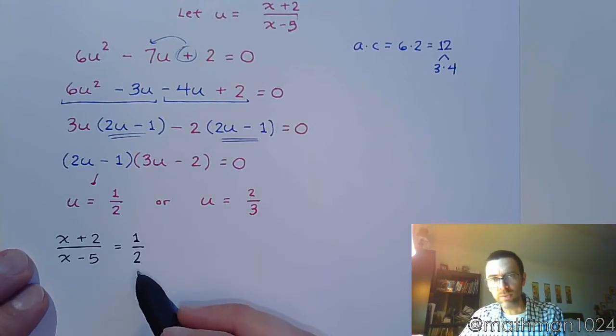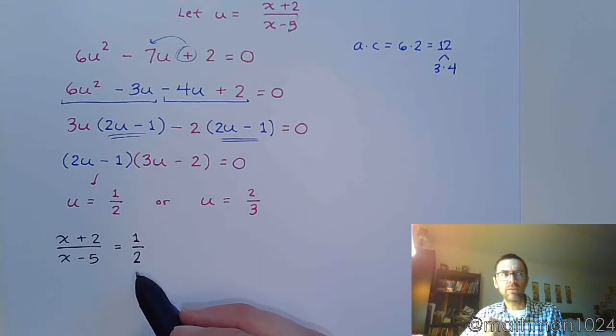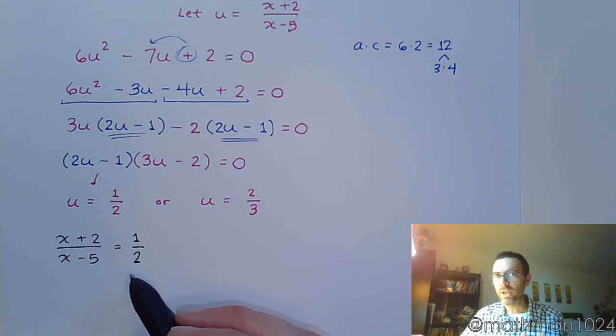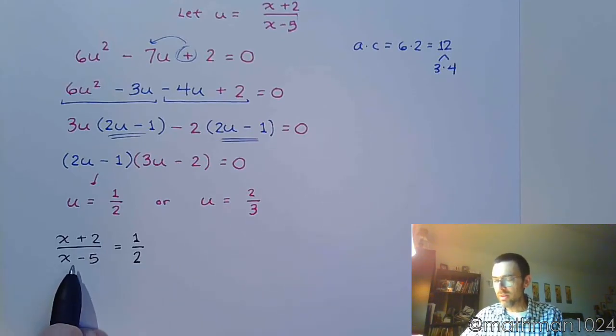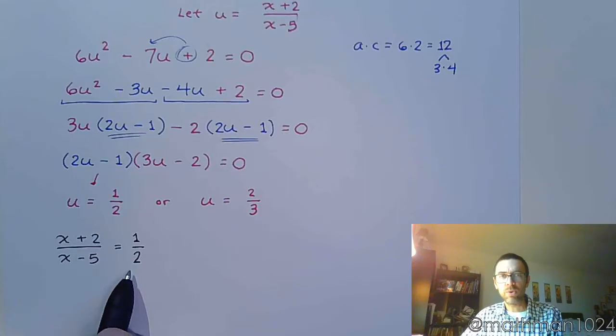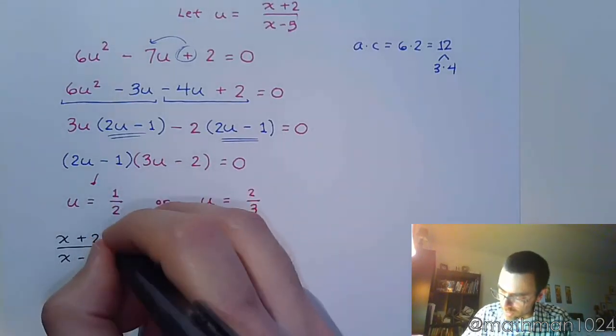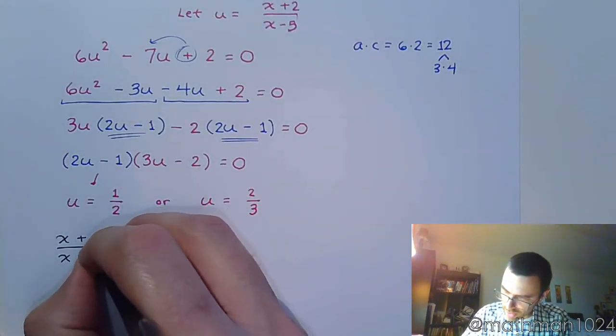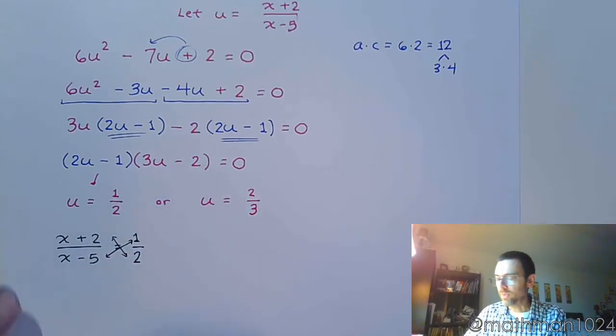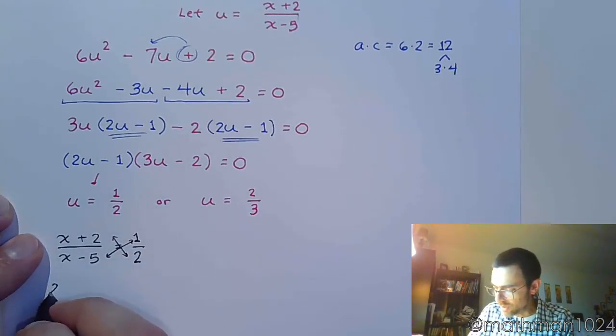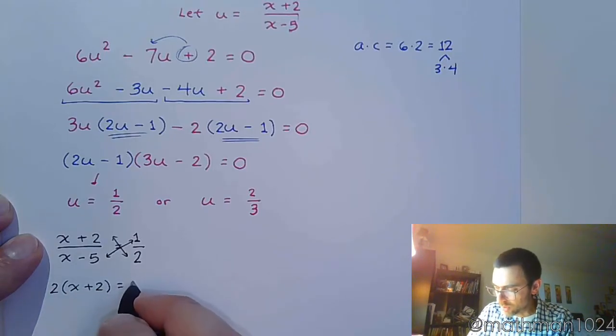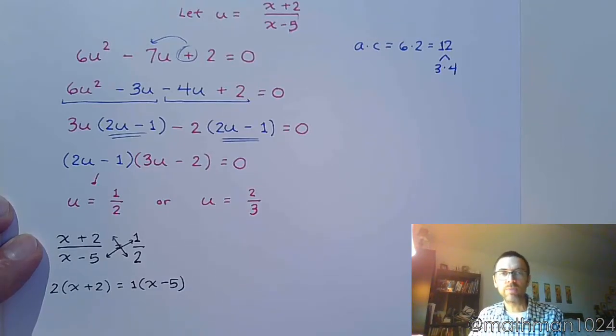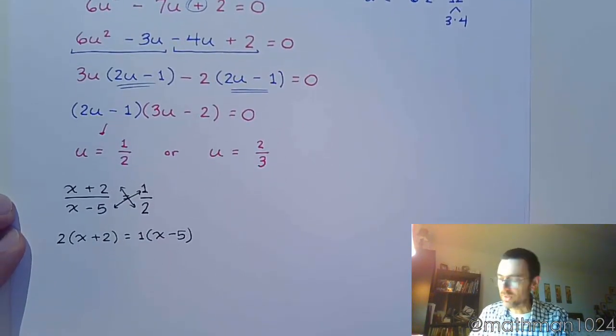So how do I solve something like this? Well, a few sections ago, we talked about solving rational equations. And we talked about how this is an example of a proportion. In a proportion, the cross products are equal. So the cross product here means 2 times x plus 2 is equal to 1 times x minus 5. And we just solve this, right?